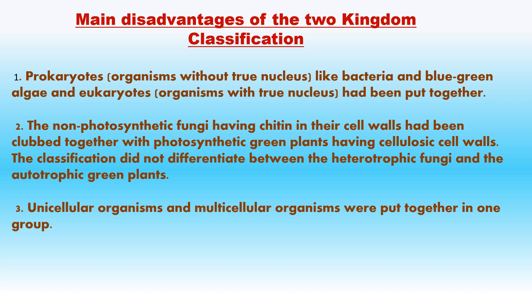Main disadvantages of the two kingdom classification: 1. Prokaryotes (organisms without true nucleus, like bacteria and blue-green algae) and eukaryotes were put together. 2. Non-photosynthetic fungi having chitin in their cell walls were clubbed with photosynthetic green plants having cellulosic cell walls — the classification did not differentiate between heterotrophic fungi and autotrophic green plants. 3. Unicellular and multicellular organisms were put together in one group. Though two kingdom classification was used for a long time, it was found to be inadequate.